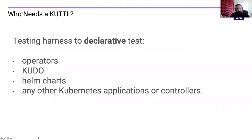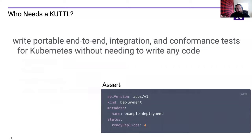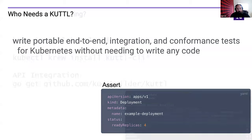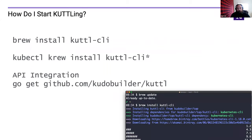Our goal was to be able to write portable end-to-end integration and conformance tests for Kubernetes without needing to write any code — without having to jump into Go test, without having to write out a separate bash testing framework. We really wanted it to feel native to Kubernetes, and you'll see that in the API decisions we made.